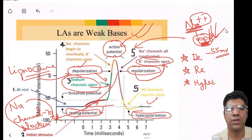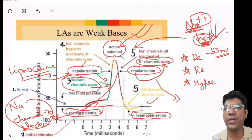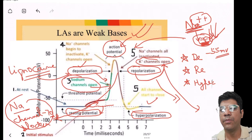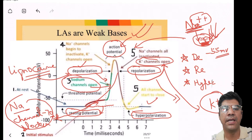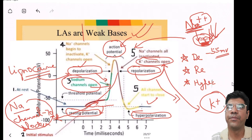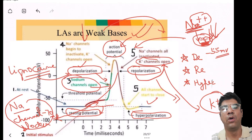In repolarization after depolarization, the nerves undergo repolarization to restore the resting membrane potential via opening of potassium channels, allowing potassium to leave the neuron. Lignocaine, as a sodium channel blocker, primarily affects sodium channels and does not have a direct impact on potassium channels. However, its action during depolarization can indirectly influence the subsequent repolarization process, causing repolarization to occur more slowly.